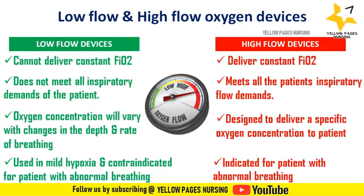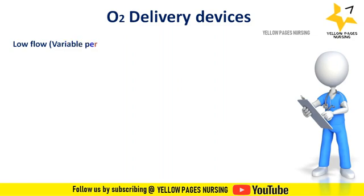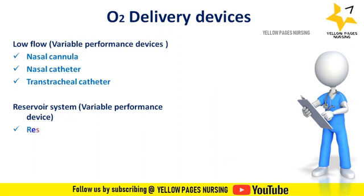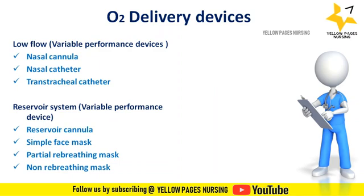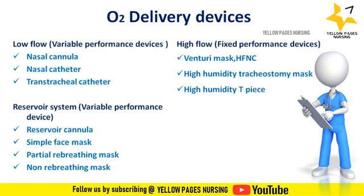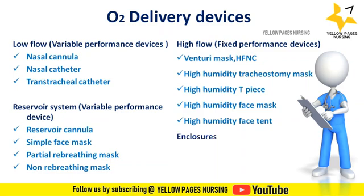Under low flow or variable performance devices come nasal cannula, nasal catheter, and transtracheal catheter. Under the reservoir system (variable performance devices) come reservoir cannula, simple face mask, partial rebreathing mask, and non-rebreathing mask. Under high flow fixed performance devices come venturi mask, large volume aerosol system, high humidity tracheostomy mask, high humidity face mask, and high humidity face tent. Under enclosures come oxygen tent and oxygen hood.